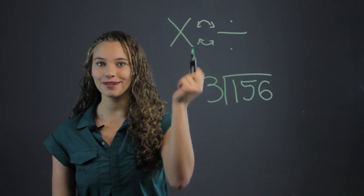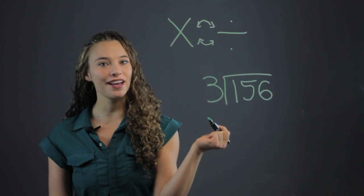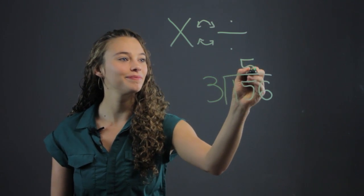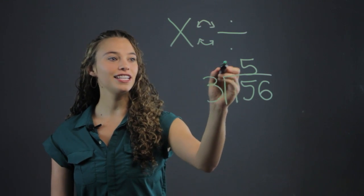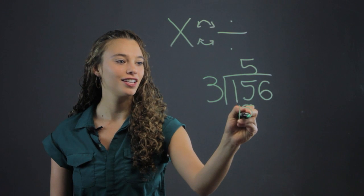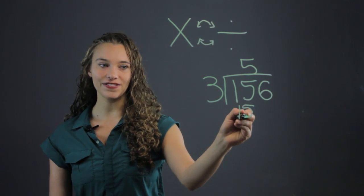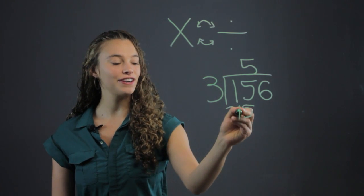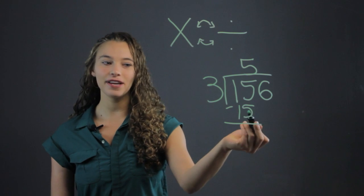How many times? Well, we've memorized our multiplication times tables. It goes in 5 times. So then we do 3 times 5, what we just did. We know it's 15. We line it up under the 15. We subtract 15 minus 15, and we get 0.